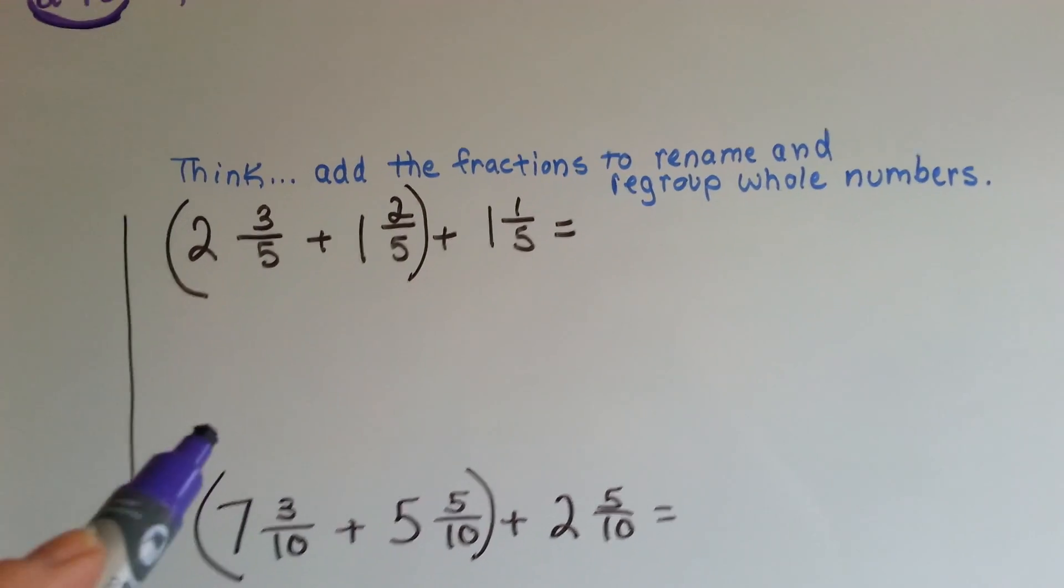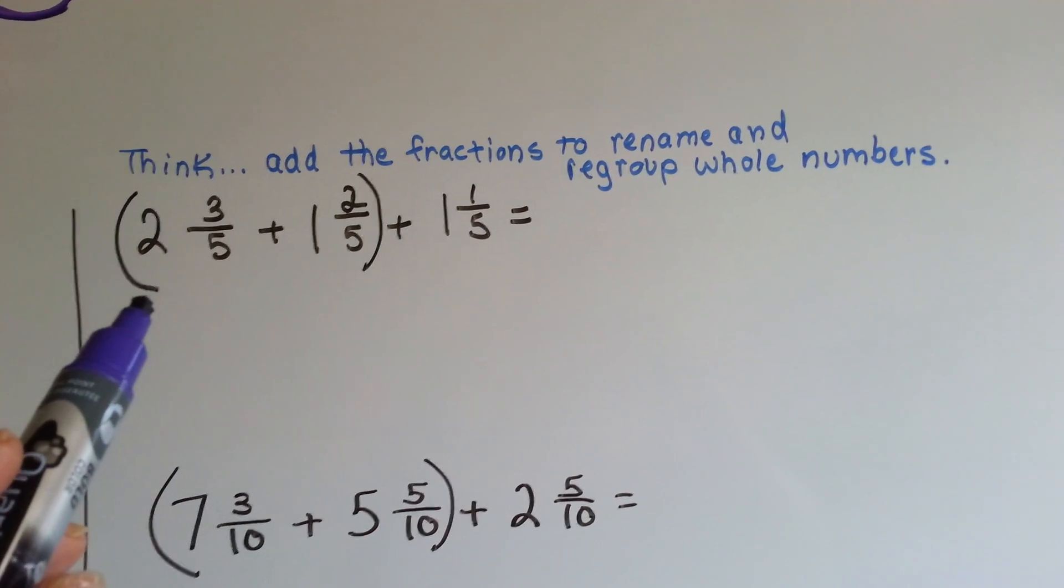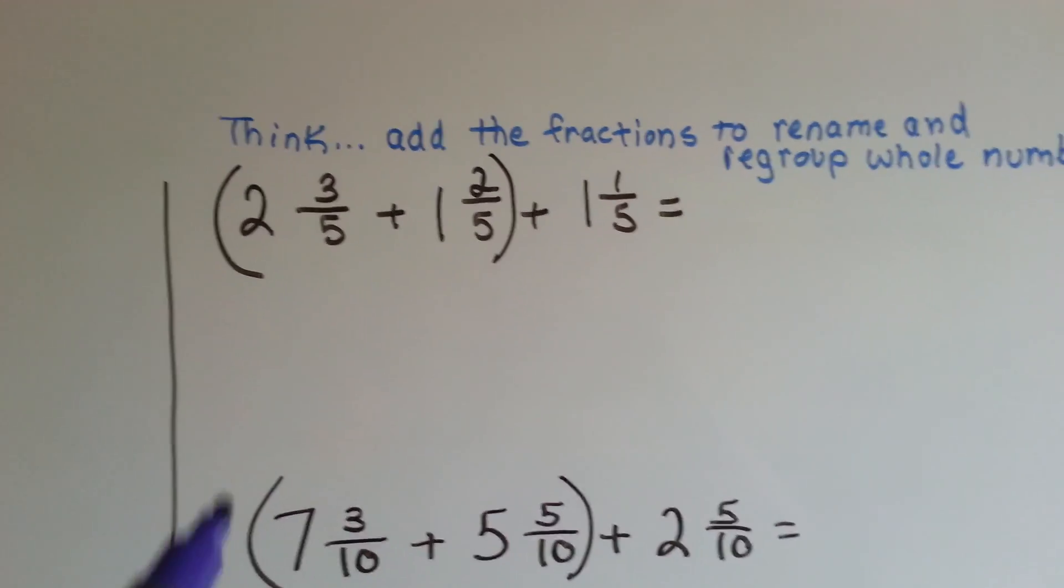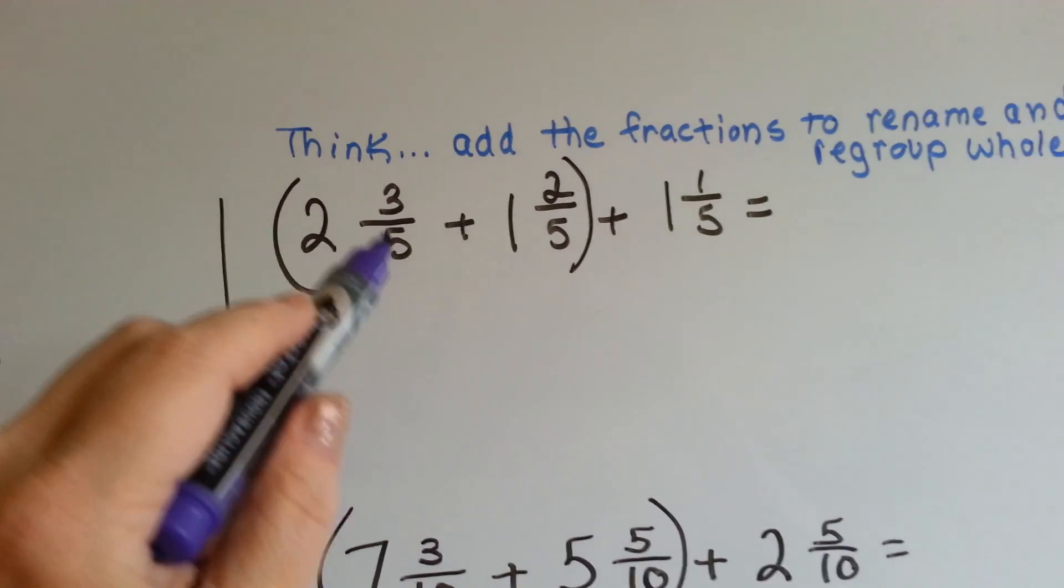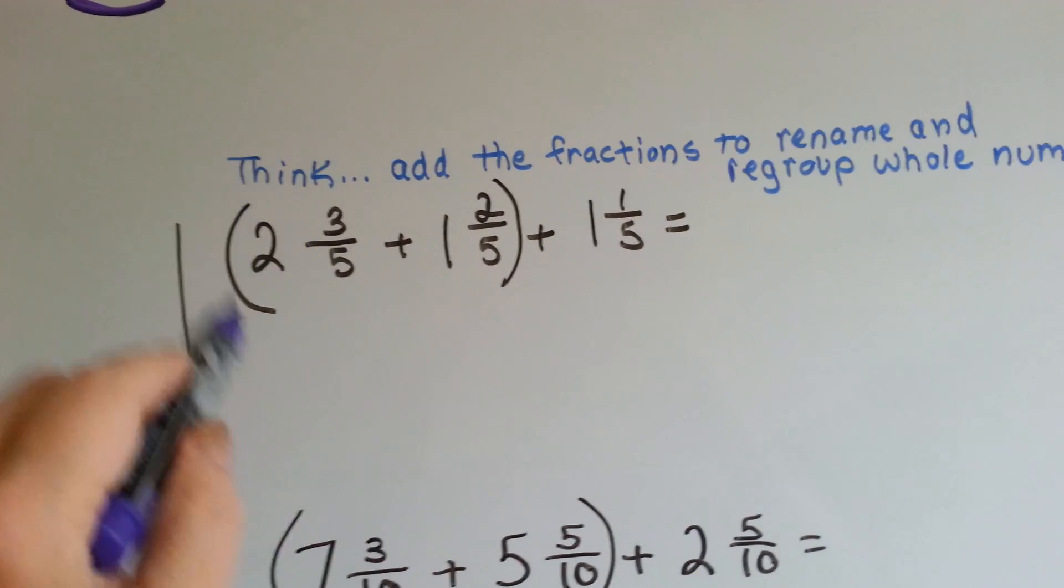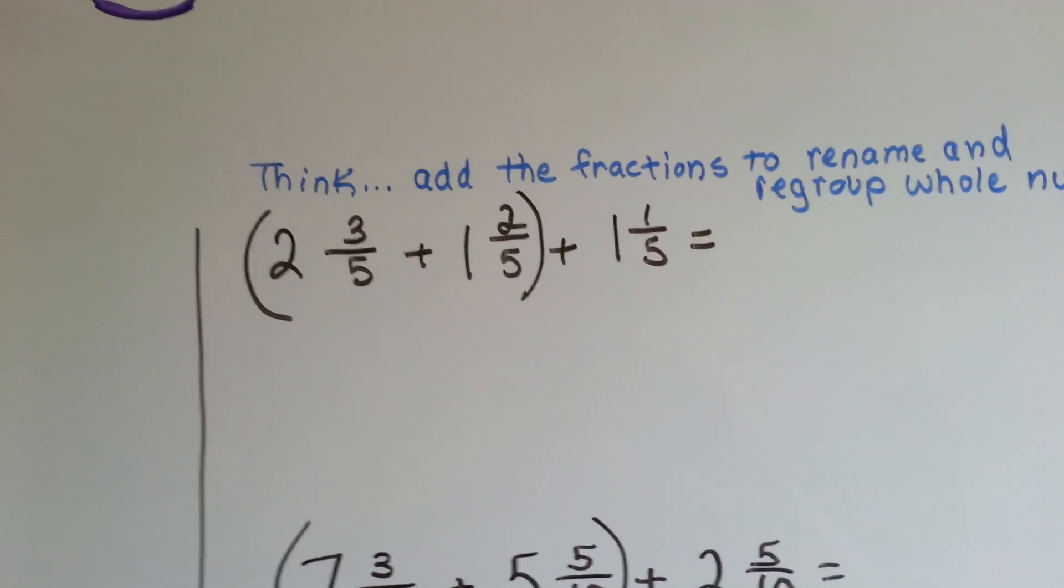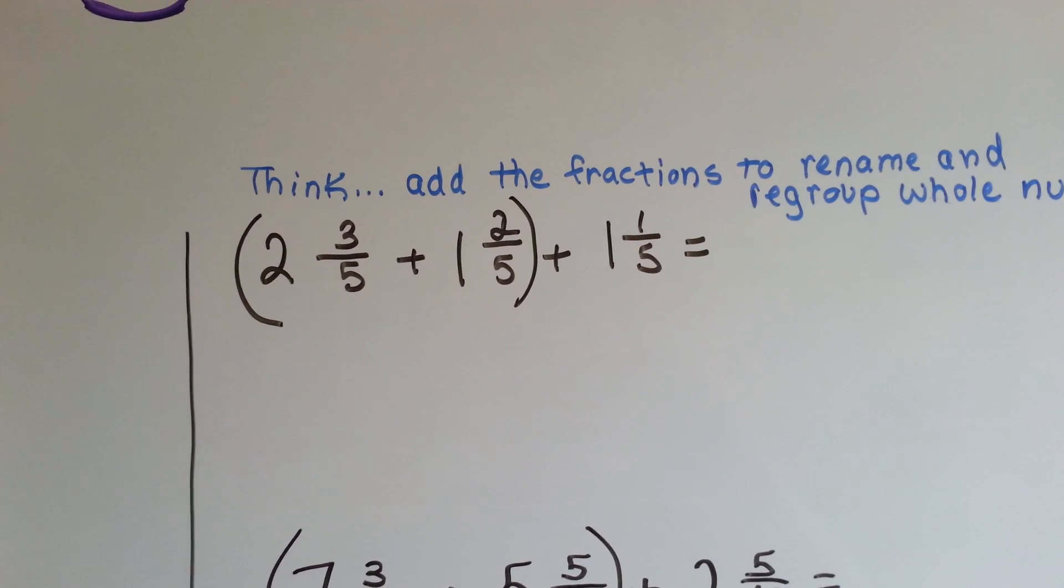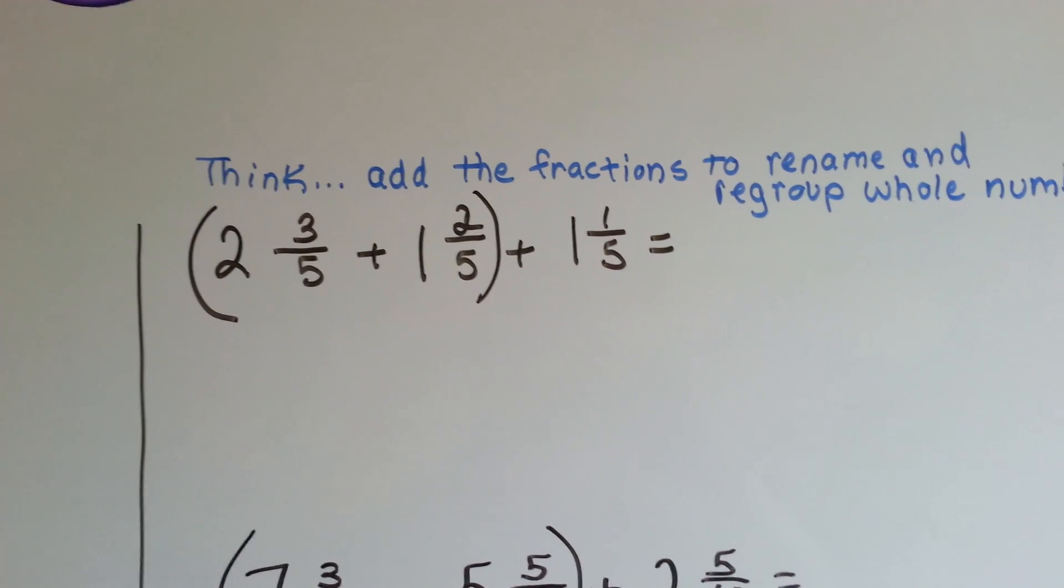So we've got to think to ourselves, add the fractions to rename and regroup whole numbers. If we saw this one, 2 and 3 fifths plus 1 and 2 fifths, it's in parentheses, but are these good parentheses to help us? Or would it be better to group them in a different way? Actually these parentheses can help us.